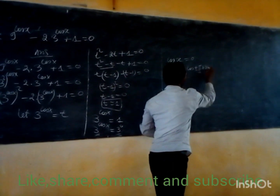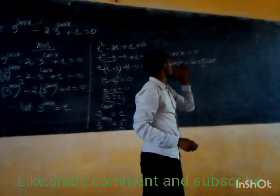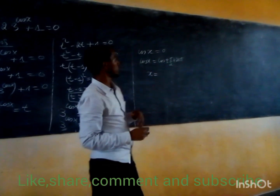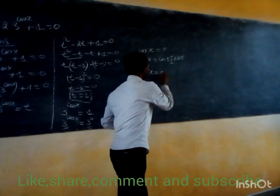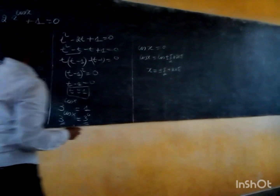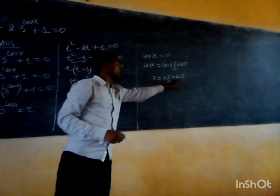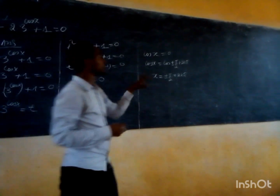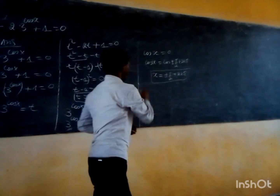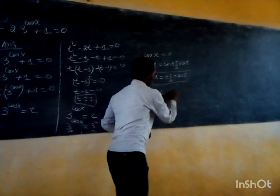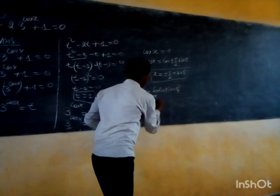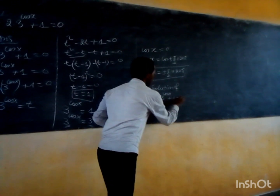So cosine of x equals 0. Using the periodic property of the cosine function, the general solution is x equals π over 2 plus 2kπ, where k is any integer. This gives us the general solution of the equation. The solution of 9 to the power cosine of x minus 2, times 3 to the power cosine of x plus 1, equals 0 is x equals π over 2 plus 2kπ.